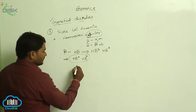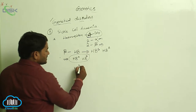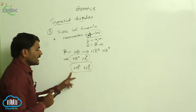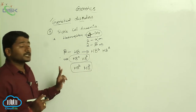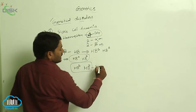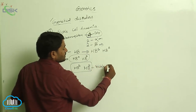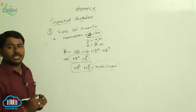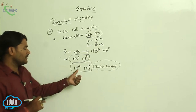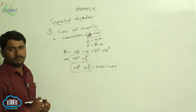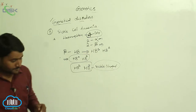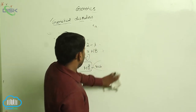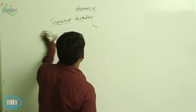If you take individuals with homozygous HbS/HbS, these are affected individuals. In these individuals, the RBC will be converted into sickle shape — the structure of the RBC is changed. Whenever HbS/HbS alleles are produced by the gene, let us see what happens.